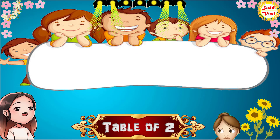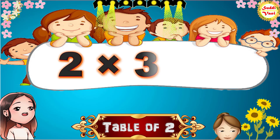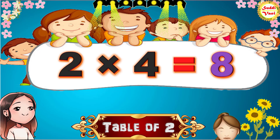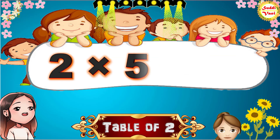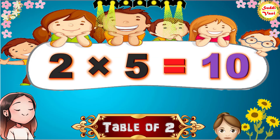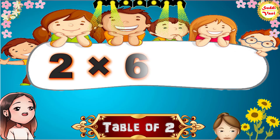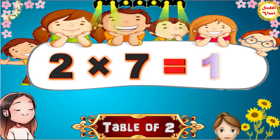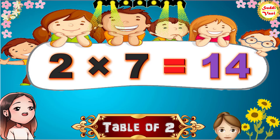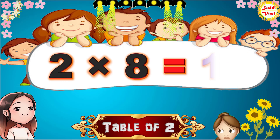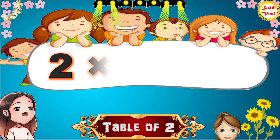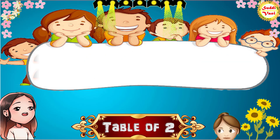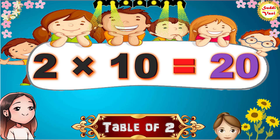2 times 2 is 4, 2 times 3 is 6, 2 times 4 is 8, 2 times 5 is 10, 2 times 6 is 12, 2 times 7 is 14, 2 times 8 is 16, 2 times 9 is 18, 2 times 10 is 20.